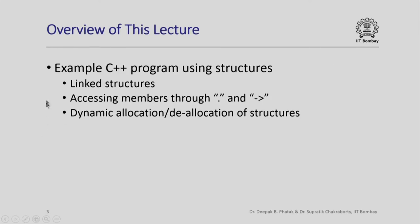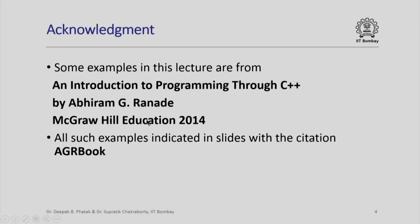In this lecture we are going to look at an example C++ program that makes heavy use of structures. Particularly it is going to make use of linked structures in which we are going to access members through both the dot operator and the arrow operator, and we are also going to encounter dynamic allocation and deallocation of structures. Some examples in this lecture are from the AGR book, an introduction to programming through C++ by Abhiram G. Ranade, published by McGraw Hill Education in 2014, and all such examples will be indicated in the slides with the citation AGR book.